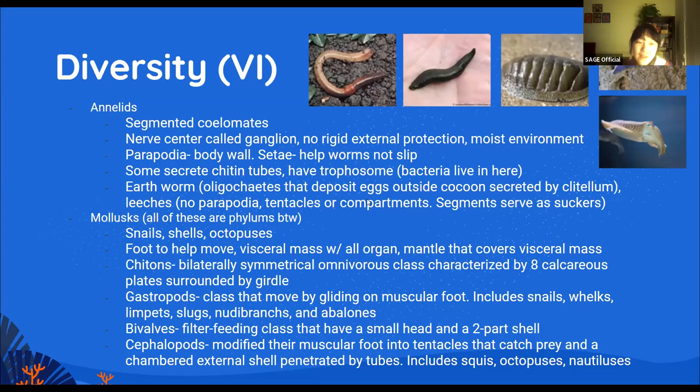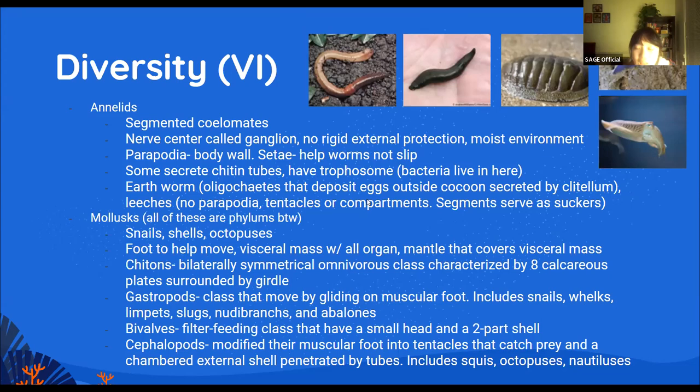Mollusks, or phylum Mollusca, include snails, shells, and octopuses. They have a set of very distinct shared characteristics: a foot that helps them move (in snails, the foot is modified to be under the shell), a visceral mass where all the organs clump together, and a mantle that protects the visceral mass. The mantle has been modified to become snail shells and oyster shells.